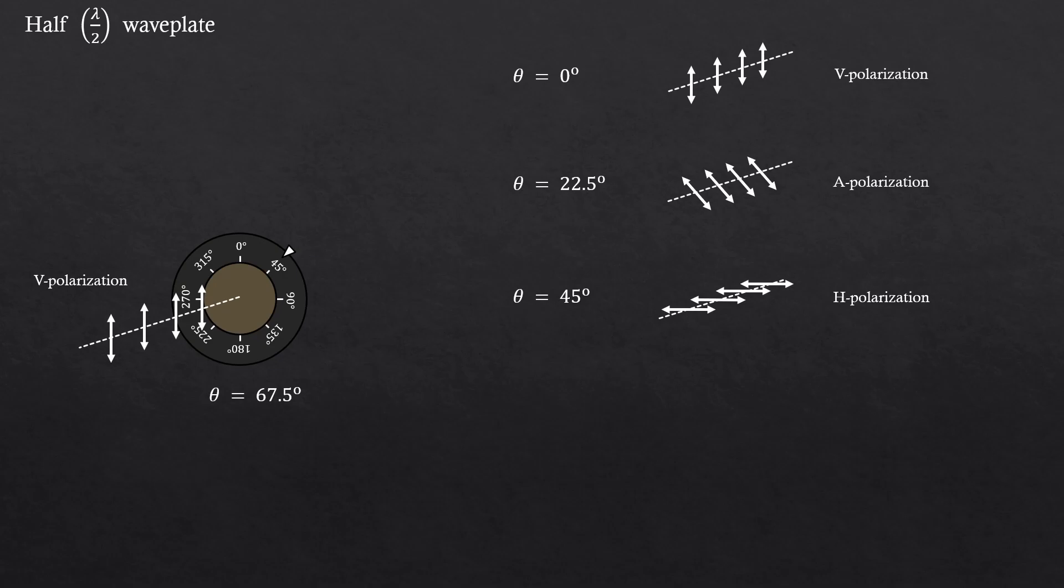Now let's try 67.5 degrees, which is the 3 quarters of the 90 degrees. That will give diagonal polarization.